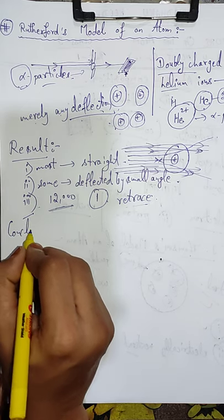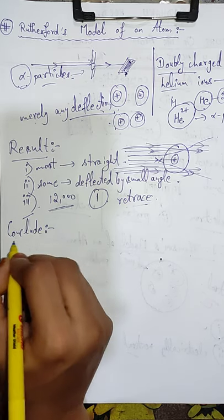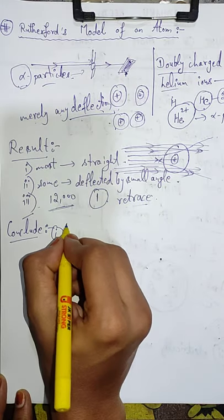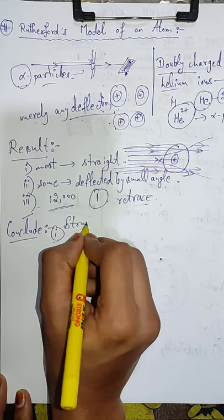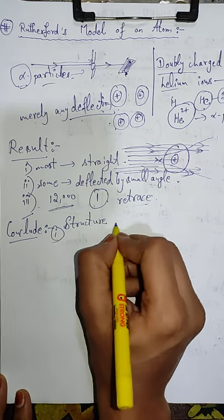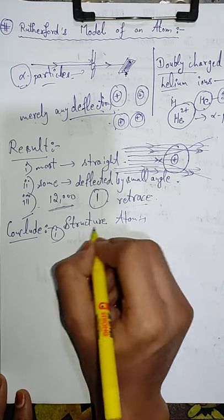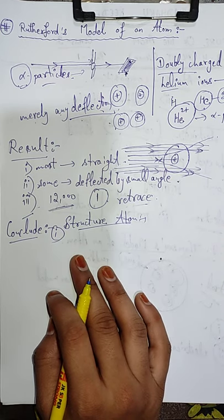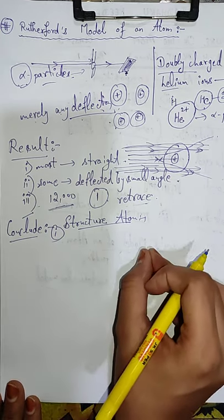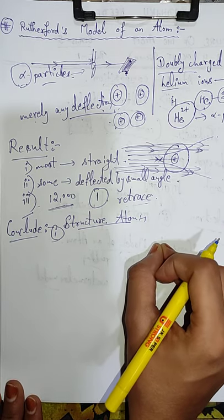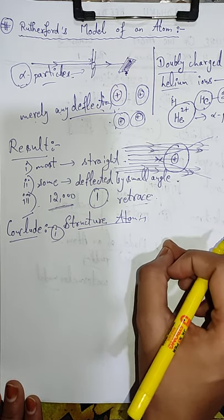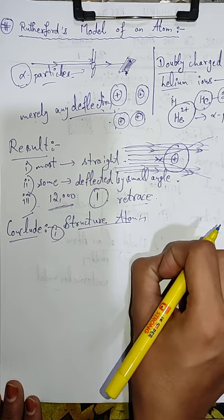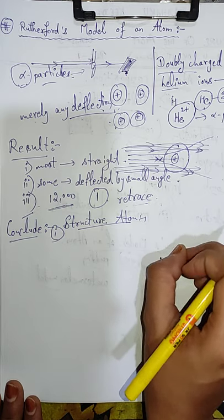Isa kyun hua? Phir unhone conclusion diya — yeh to the results, phir unhone cheezein conclude kiin about the structure of atom. Pehli cheez jo inhone apne conclusion mein include ki woh thi ki ek positive charge hai atom ke center mein, jisko humne nucleus ka naam de diya, aur woh atom ke center mein exist karta hai. Nearly all the mass of an atom resides in the nucleus.